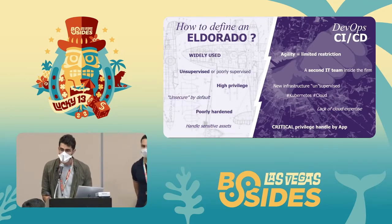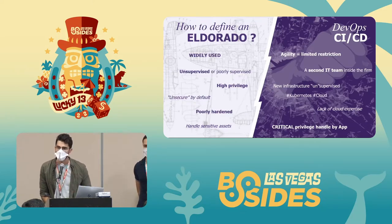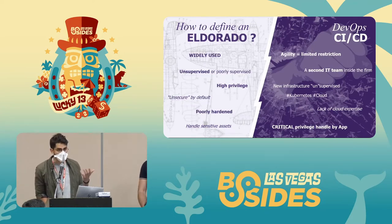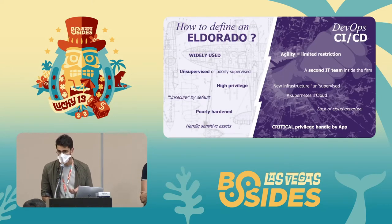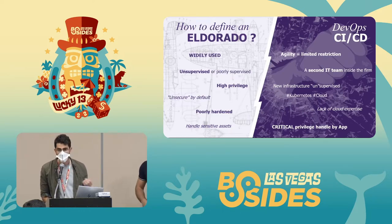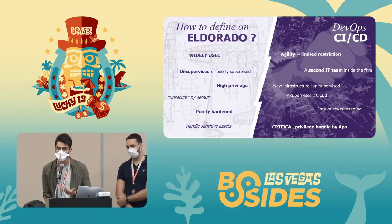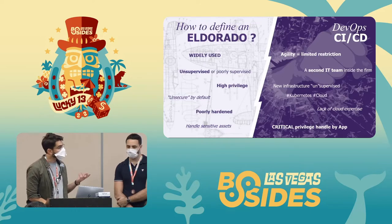DevOps teams will usually take advantage of new types of infrastructure such as Kubernetes and cloud providers, which are in our experience less supervised and less monitored than on-premise infrastructure. You cannot manage cloud infrastructure the same way you would on-premise. What we've seen is a lack of cloud expertise within DevOps teams — they made a transition from on-premise to cloud but don't really understand the associated security risks, resulting in tons of security misconfigurations.